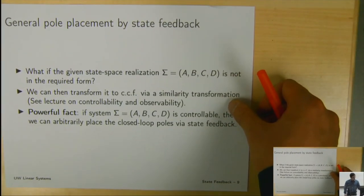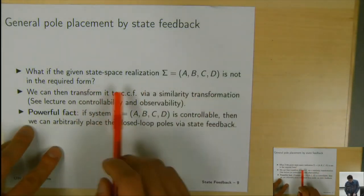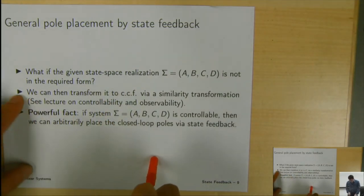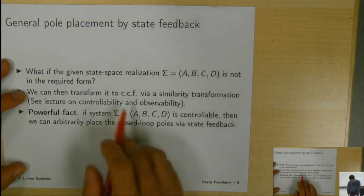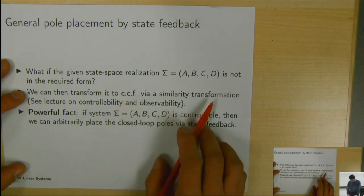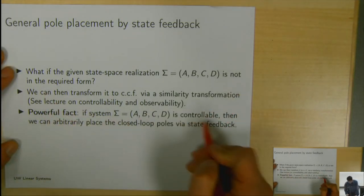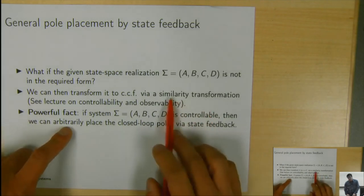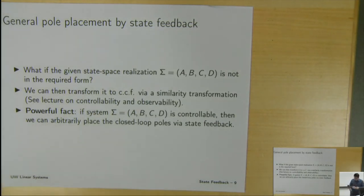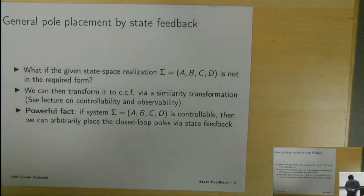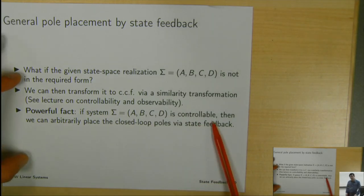What if the given state-space realization is not in controllable canonical form? That is not the end of the story. If the system is still controllable, we can transform it into controllable canonical form by a similarity transformation, which does not change the locations of the poles or the eigenvalues of the A matrix. So we can still arbitrarily place the closed-loop poles by state feedback.